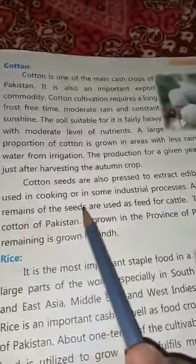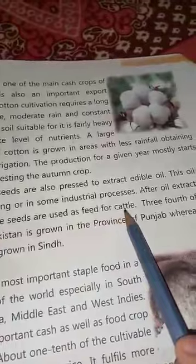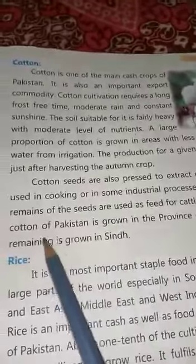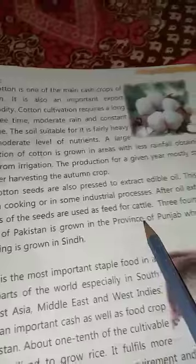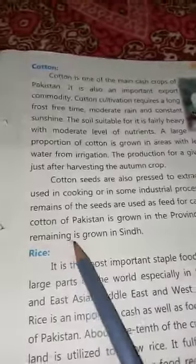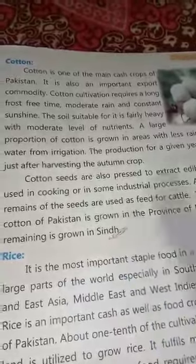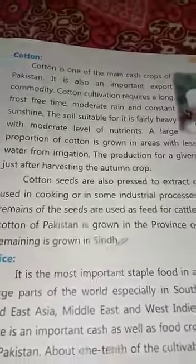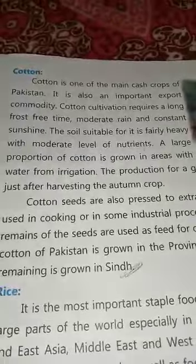After oil extraction, the remains of the seeds are used as feed for cattle. Three-fourths of the cotton of Pakistan is grown in the province of Punjab, while the remaining portion is grown in Sindh. Cotton is a major cash crop for Pakistan.